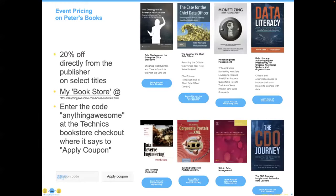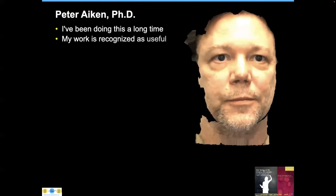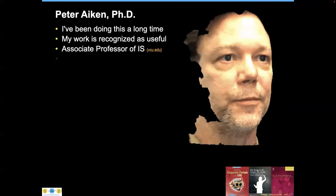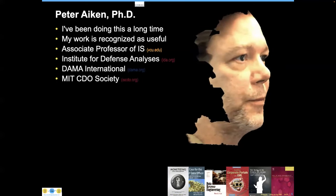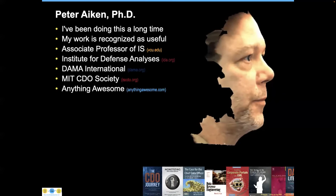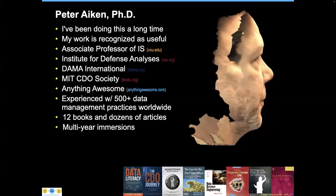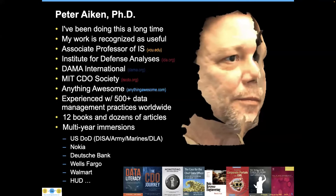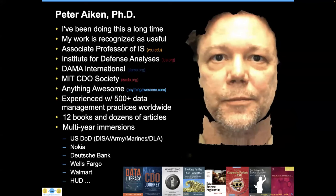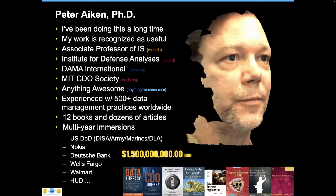Now let me introduce our speaker for the series, Dr. Peter Akin. Peter is an acknowledged data management authority and associate professor at Virginia Commonwealth University, president of Dana International, and associate director of the MIT International Society of Chief Data Officers. For more than 35 years, Peter has worked with hundreds of data management practices in 30 countries. Among his 12 books are many firsts. He has helped more than 200 organizations leverage data-specific savings measured at more than 1.5 billion US dollars. His latest is Anything Awesome. And with that, let me turn everything over to Peter.